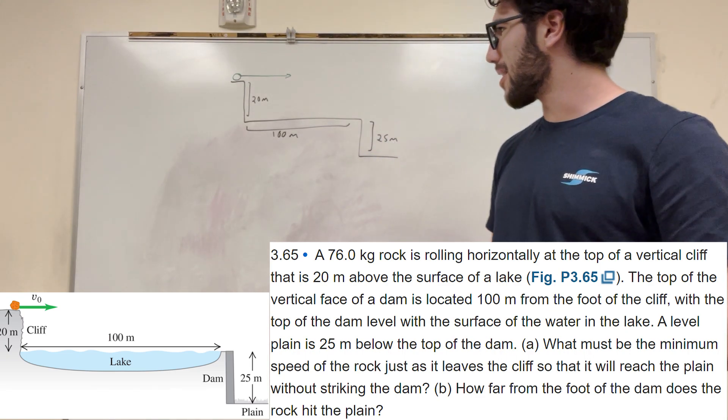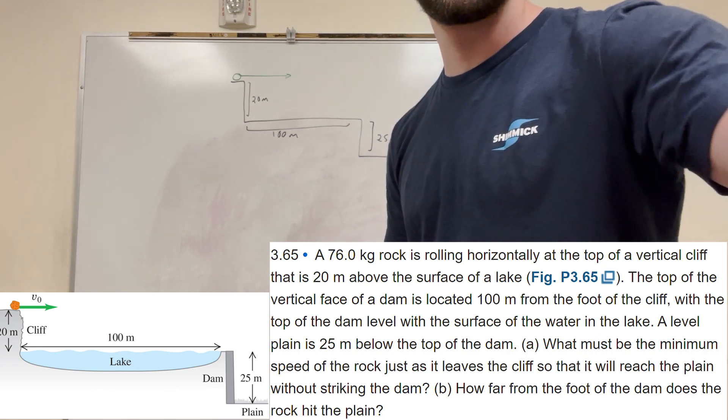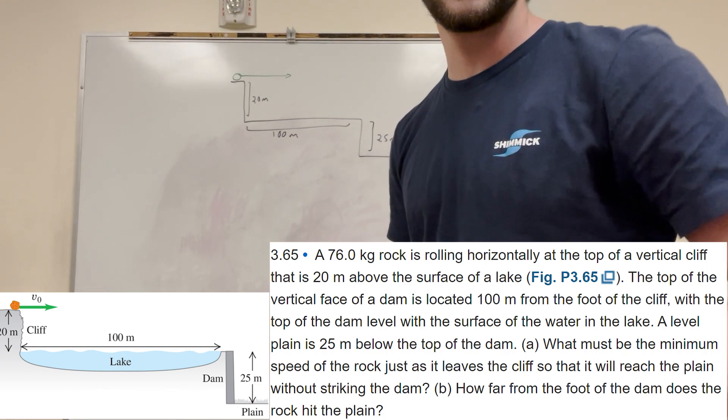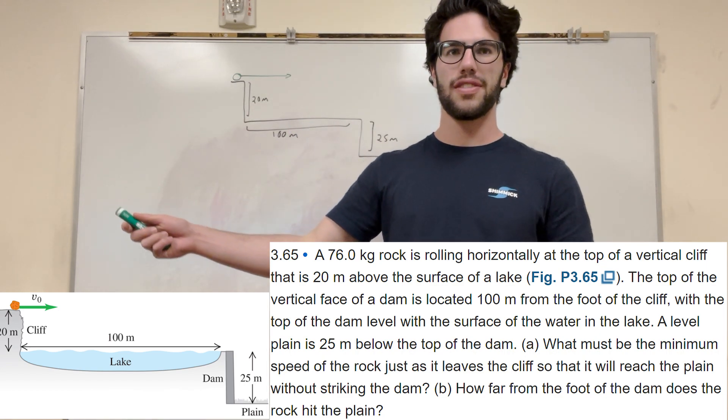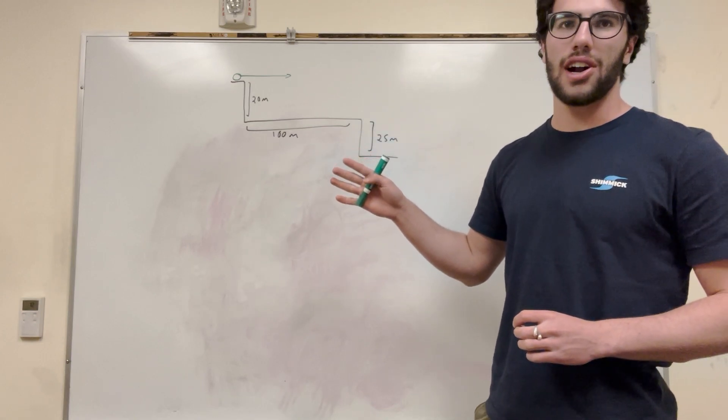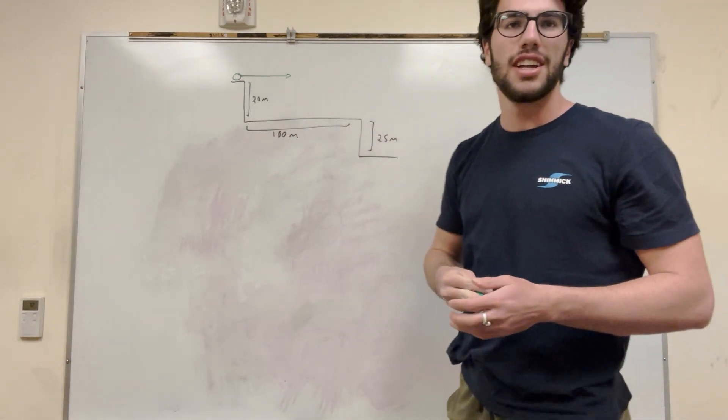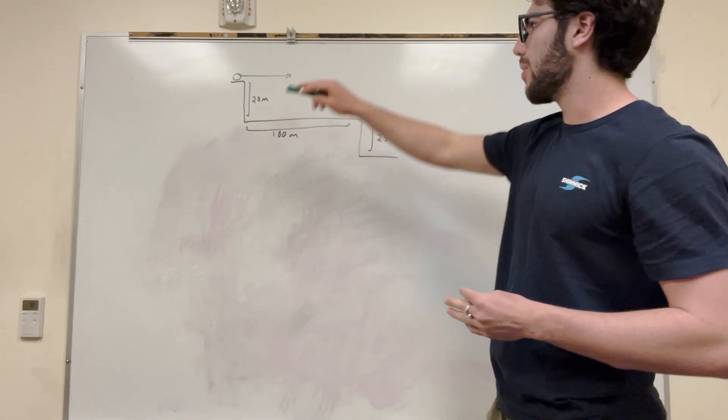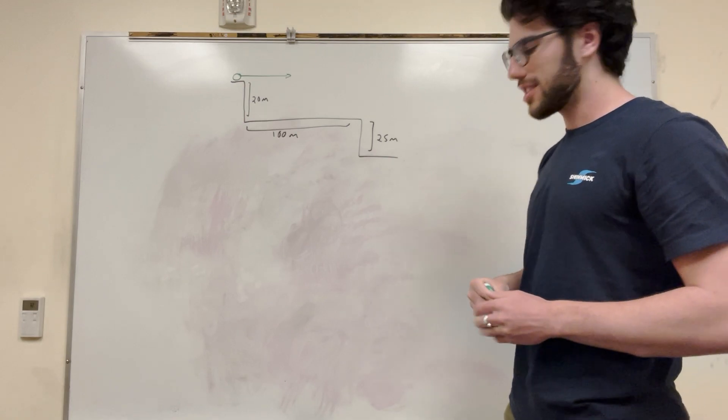What's up Cal gang, we're here with some projectile motion. So what do we got here? Well, we got this rock that's flying off a cliff. It's 76 kilograms. It's going horizontally off this cliff. And it wants to know, first of all, what is the minimum speed of the rock so that when it leaves the cliff, it's just going to clear this first ledge here. And then it wants to know how far away will it land after it clears that ledge. So let's get started on this.